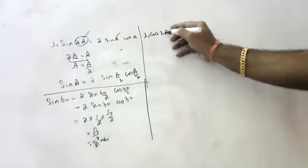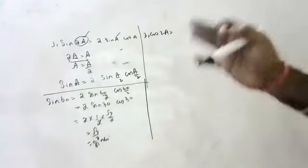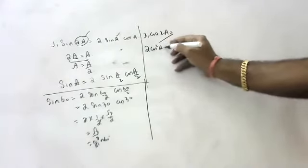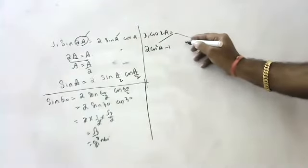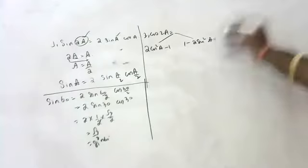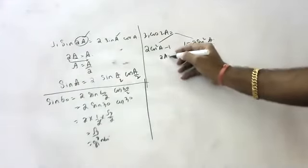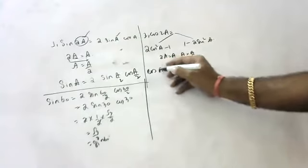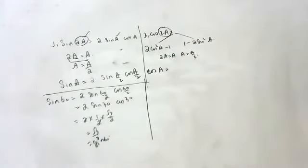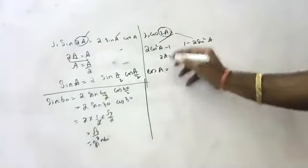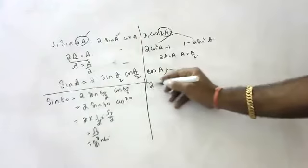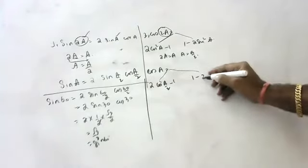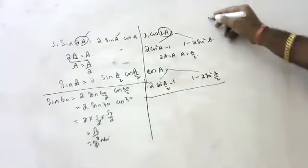In the last class I told you about cos 2a. I derived two formulas: one only in the form of cos — that was 2 cos²a − 1 — and one only in the form of sin — that was 1 − 2 sin²a. Now if I write the whole thing as cos a, substituting a with a/2, this becomes 2 cos²(a/2) − 1, or 1 − 2 sin²(a/2). This is the formula.